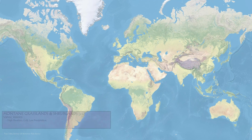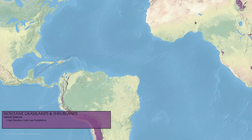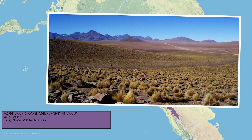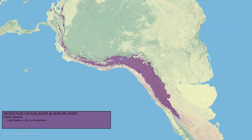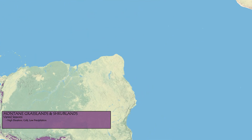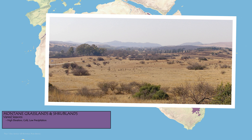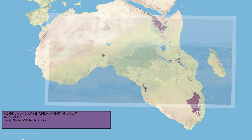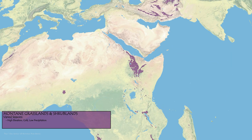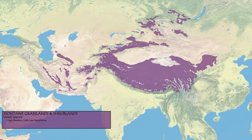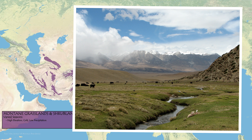The final biome we're going over is determined by elevation. When very high, it creates the montane grasslands and shrublands of the Andes, the Tibetan Plateau, and the New Zealand Alps. These occur above the tree line, creating a world of shrubs, rocks, and mosses.